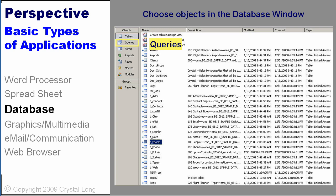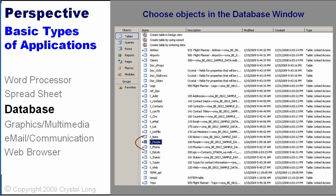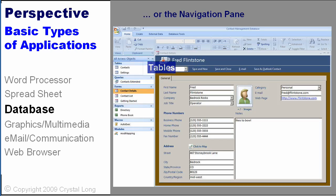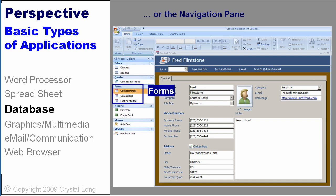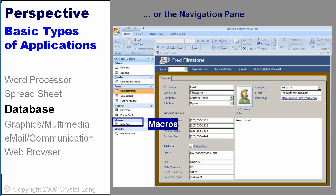An Access database has six main types of objects: tables, queries, forms, reports, macros, and modules. Once you decide what category you want, you will see those objects on the right. If you are using Access 2007, you will get around using the navigation pane. Here are the same categories we saw in the earlier interface.